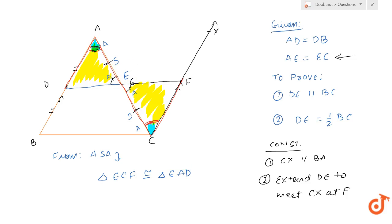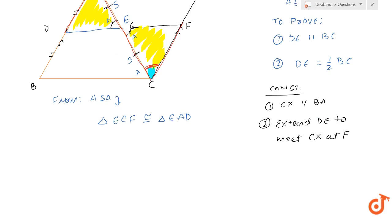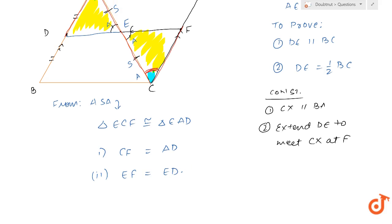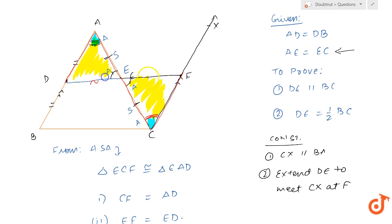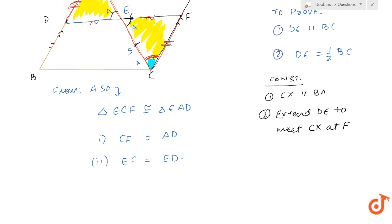Since triangle ECF is congruent to triangle EAD, I can say that CF is equal to AD. And since AD is equal to DB, it also means that CF is equal to DB.